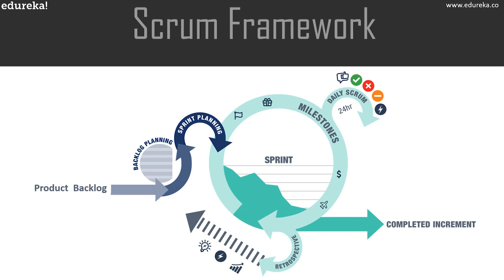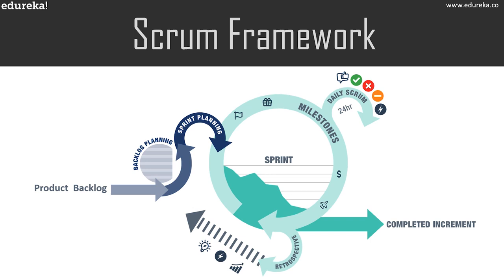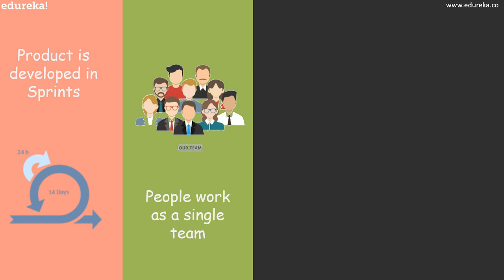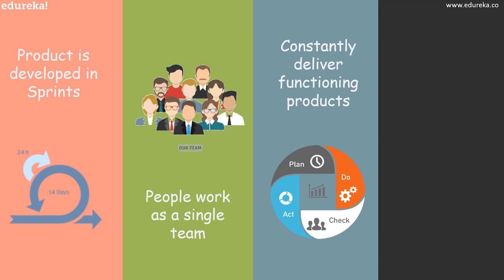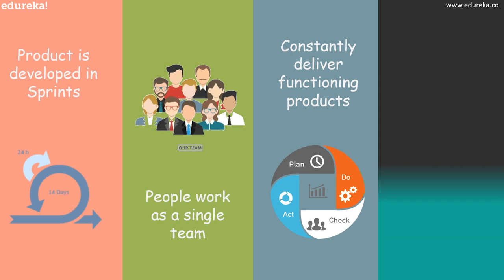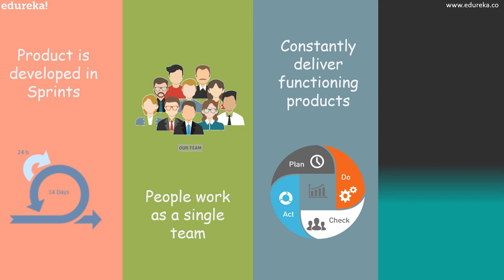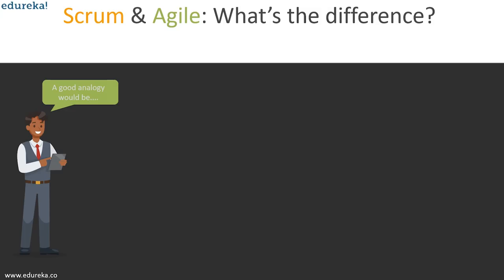On screen you can see an image depicting the entire Scrum framework, with terms like product backlog, sprint planning, the sprint, and potentially shippable increment. With Scrum, you write fewer plans and do more in short iterations called sprints. You work as one dedicated team, constantly deliver functioning products called increments, and receive continuous feedback from customers to improvise the product. In simple terms, Scrum is a flexible way of working in a rapidly changing world.